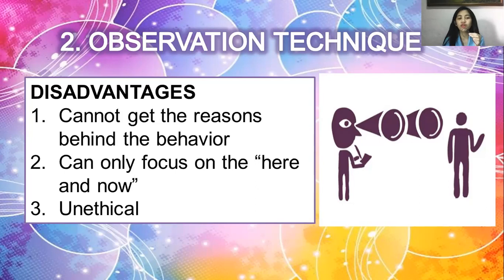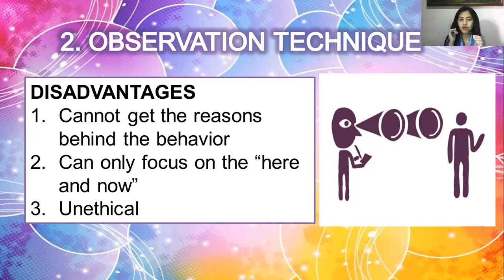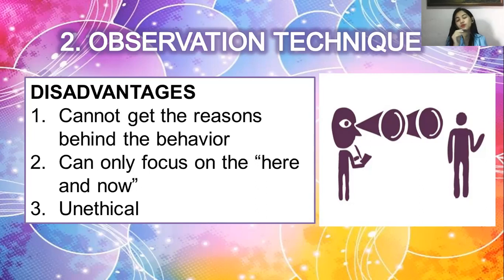The second disadvantage is you can only focus on the here and now — only shortened time. Once the customer has done the behavior, you can't ask them to repeat it. You can only record present behavior, not past or future behavior. The third disadvantage is it is unethical, because respondents have not agreed to your observation — they were not informed that you were observing them for your market research. So observation technique is considered unethical.